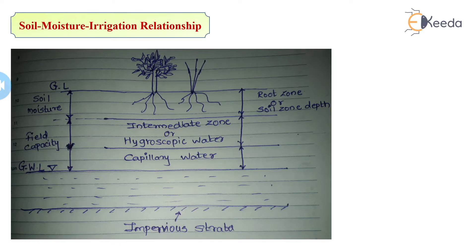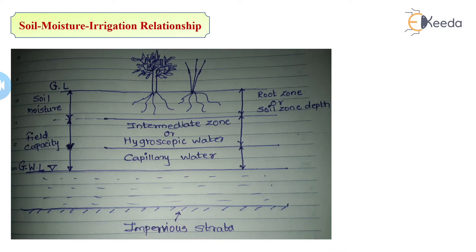By observing this image, you can understand how soil is related to irrigation water and the moisture available in the soil. This is the relationship. The question asked in the university paper for 10 marks is: explain the soil moisture irrigation relationship. You have to draw the diagram. By drawing the diagram, you can explain point by point — what is gravity water, ground water, hygroscopic water, capillary water, field capacity, and soil moisture. Writing all these points will get you full marks.